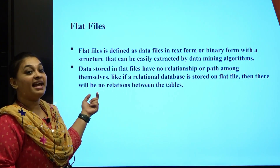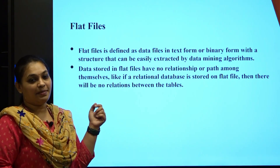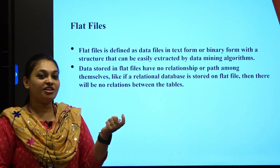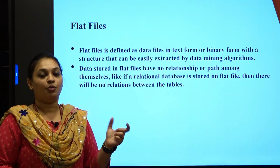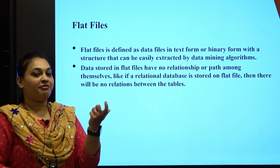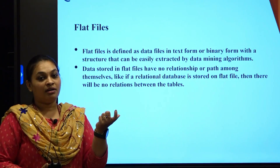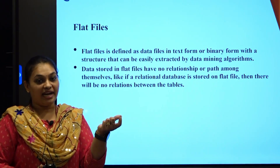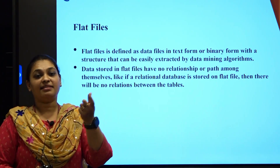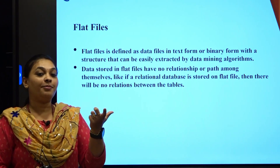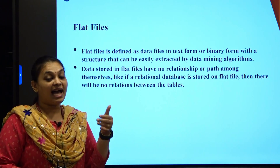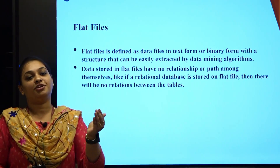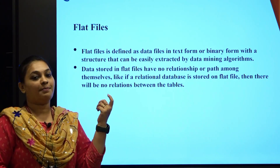Next, relational databases. Going back to your DBMS, which you have already studied, a relational database has a table-like structure with rows and columns. For example, taking a 'customer' entity: the attributes are customer ID, customer name, customer age — attributes represent your columns. The actual information the attributes hold — like ID as 1, name as ABC, age as 50 — are called records, represented as rows.